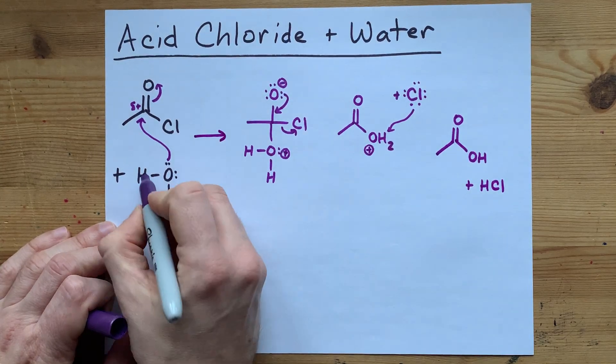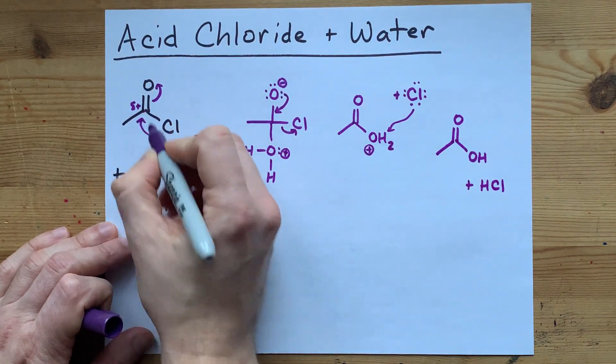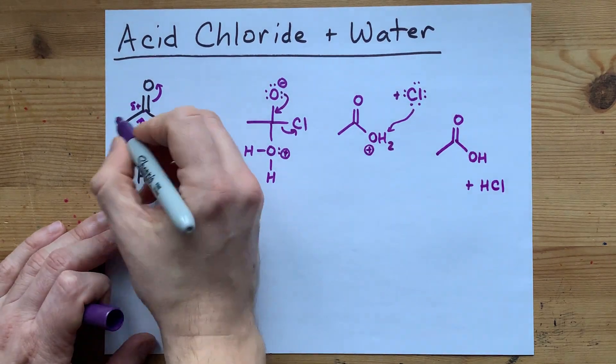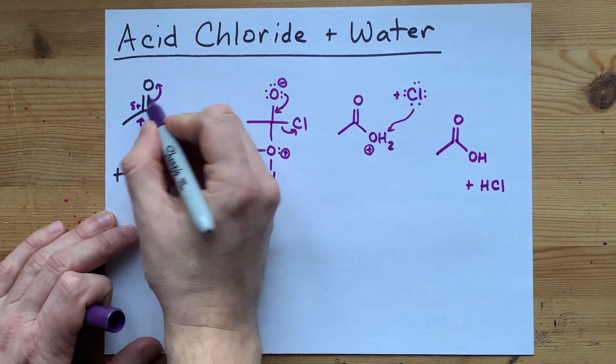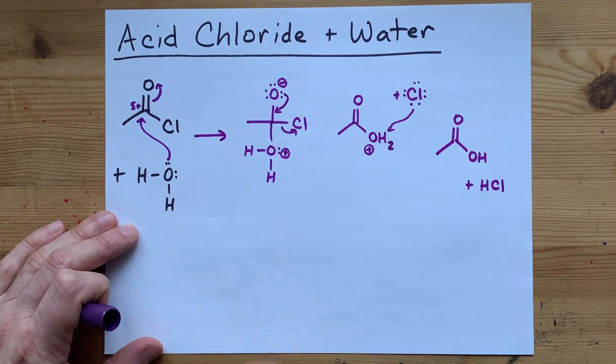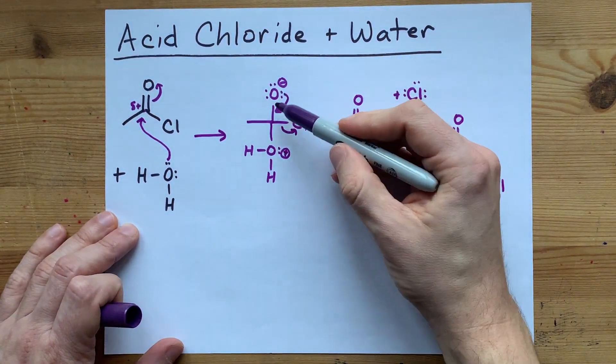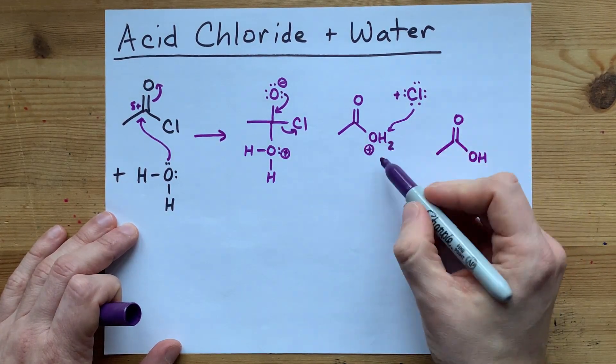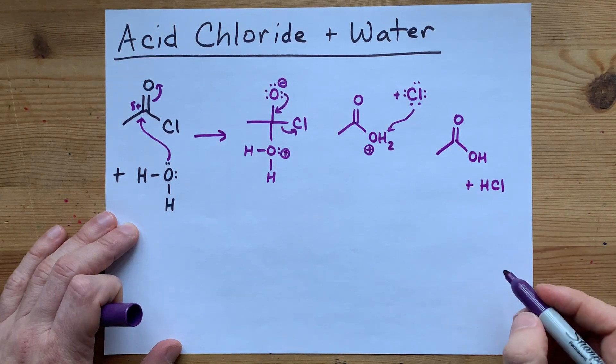So oxygen attacks the electrophilic carbon. The double bond between the oxygen breaks to accommodate four single bonds to that carbon. The double bond reforms and the chlorine leaves. And lastly, the chlorine steals one of the extra H's from the water.